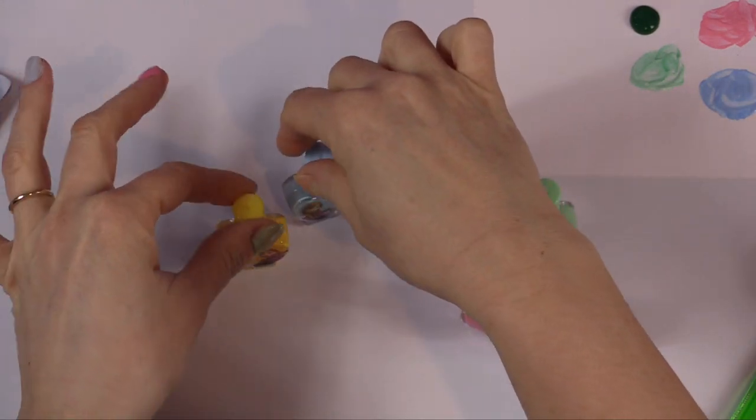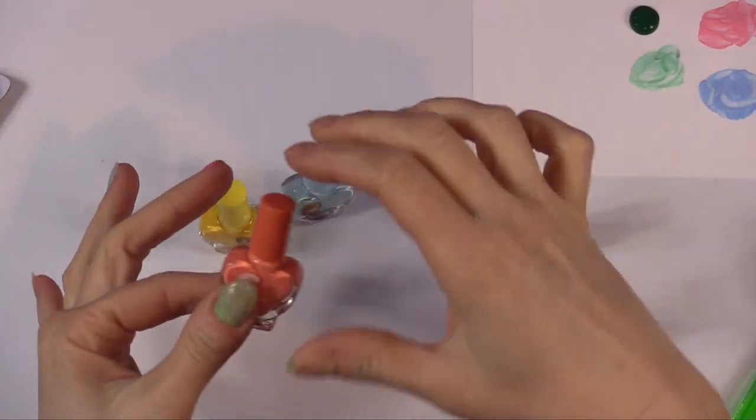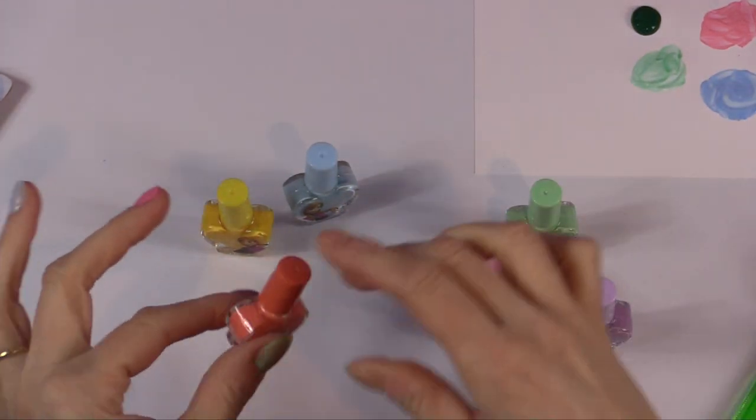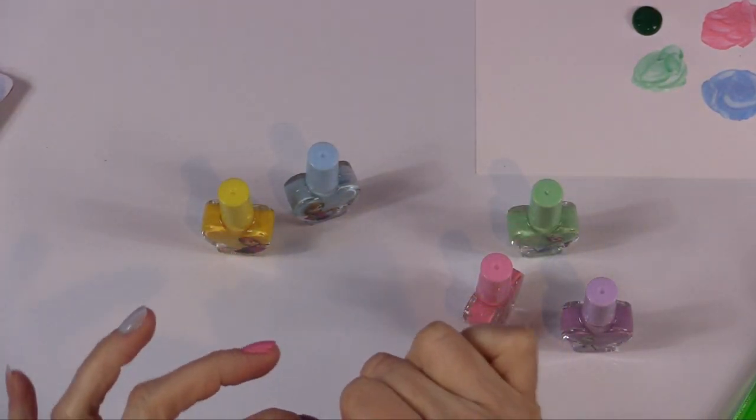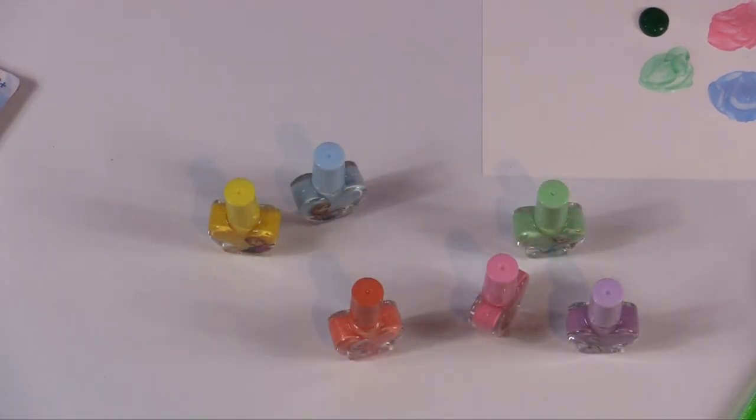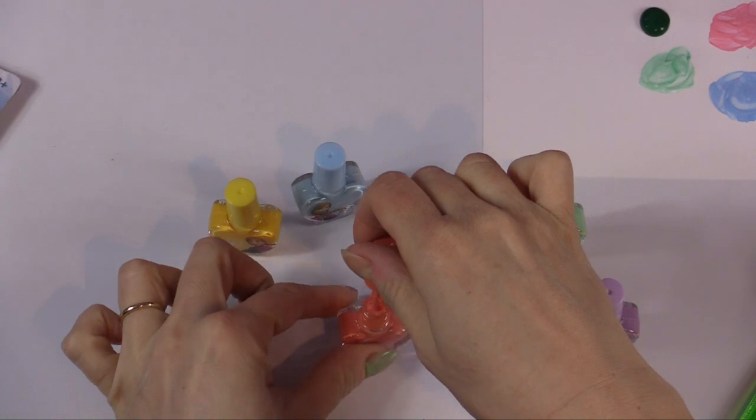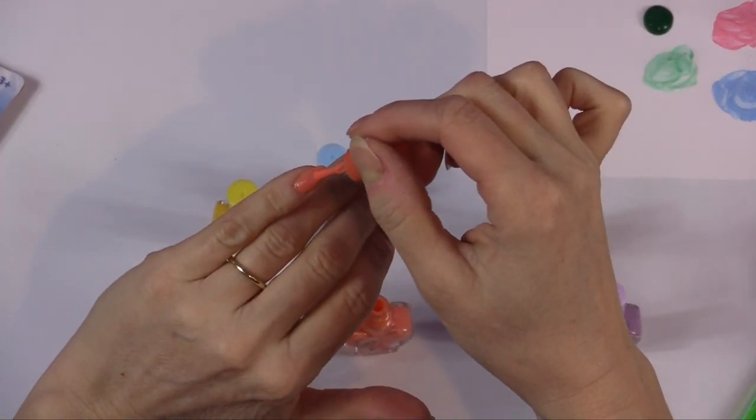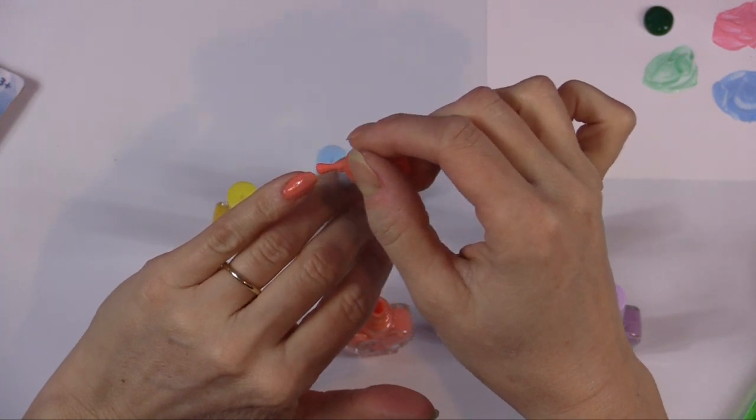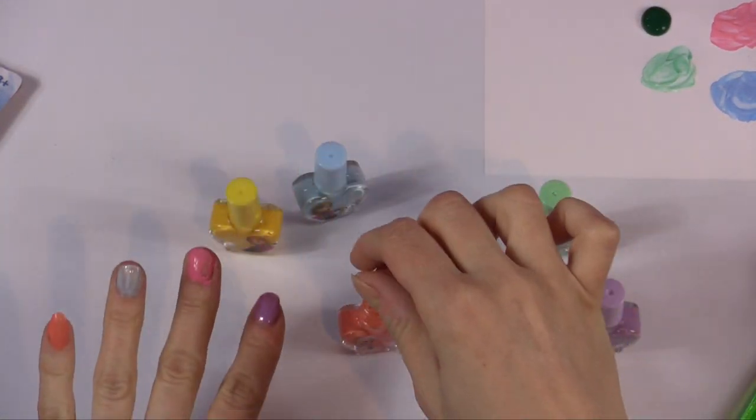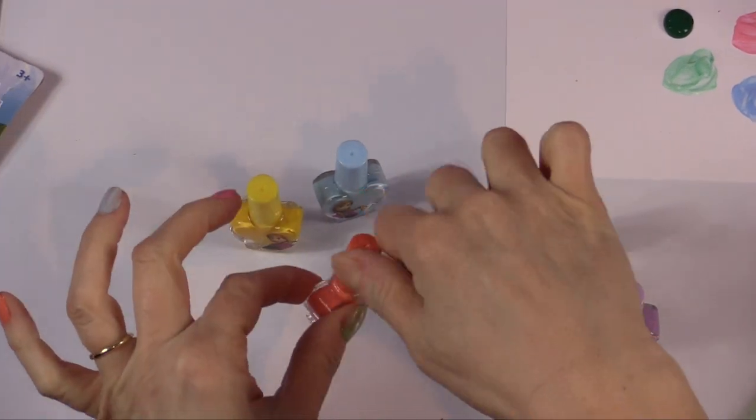And how about we'll try, lastly, maybe we'll do the orange. Orange has Elsa on it. Okay, let's do this here. Oh, pretty. Oh, look at that. We have all our pretty pastel colors.